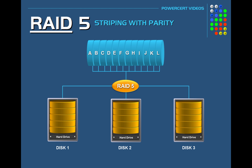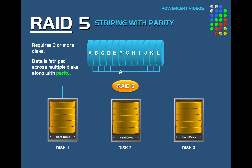In order to use RAID 5 you need to have three or more disks. RAID 5 is a common setup used especially in companies because it's fast and it can store a large amount of data. In a RAID 5 setup the data is not duplicated but it's striped or spread across multiple disks. In addition to the data, there is another very important piece of information that is evenly spread across all the disks, and that information is called parity. Parity is used to rebuild the data in the event of a disk failure.